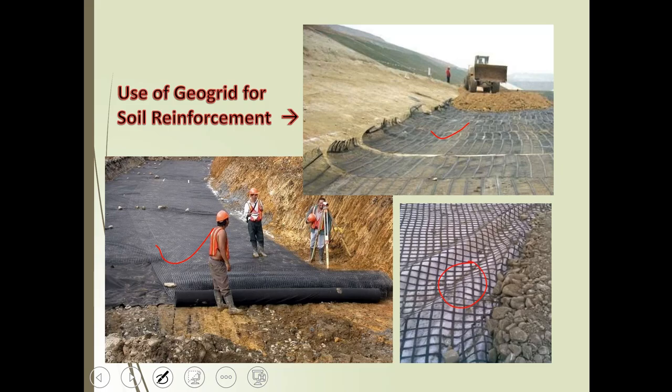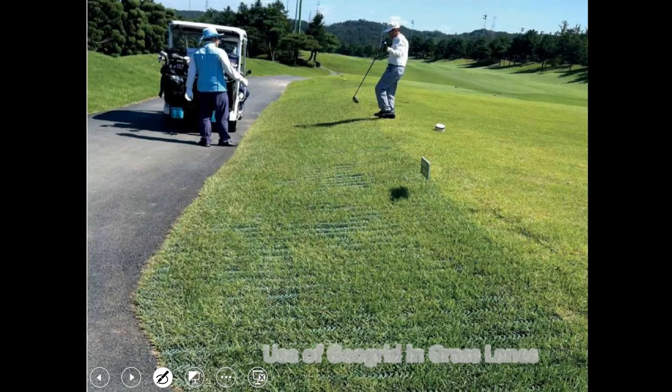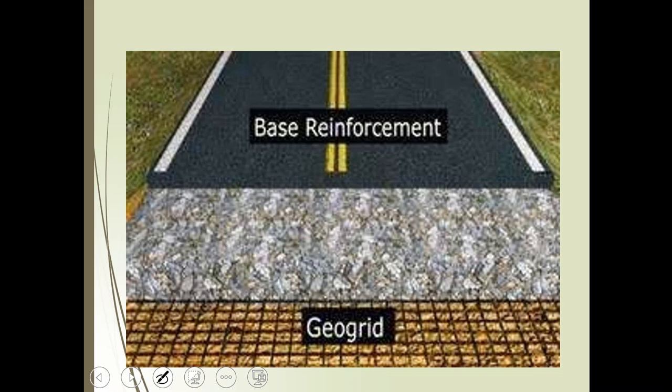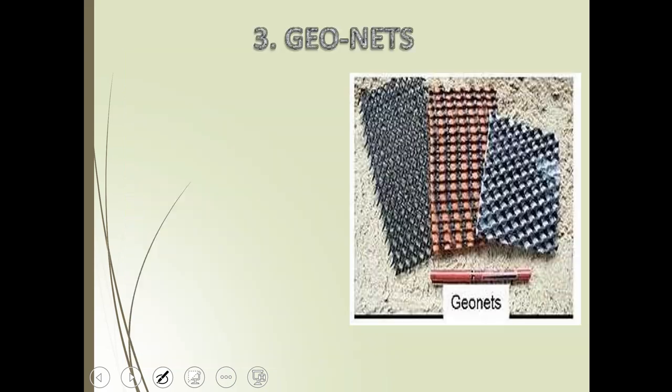The use of geogrids in grasslands shows that there is a surface layer, a base layer, and a geogrid layer. We have to place the geogrids below the base of the pavement to get the benefit, and vehicle loads or moving loads will be equally transferred and distributed.